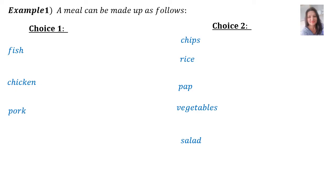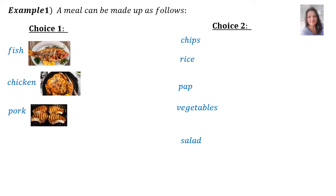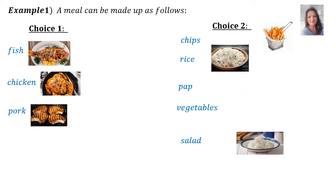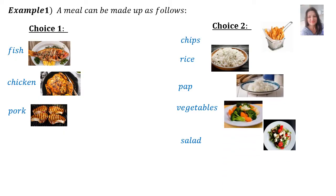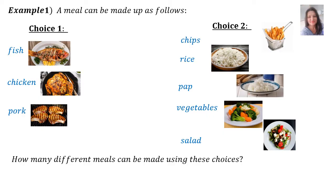A meal can be made up as follows. There are two choices. Under choice 1, you find fish, chicken or pork. And then choice 2 will be chips, rice, pop, vegetables or salad. The question says: how many different meals can be made using these choices?